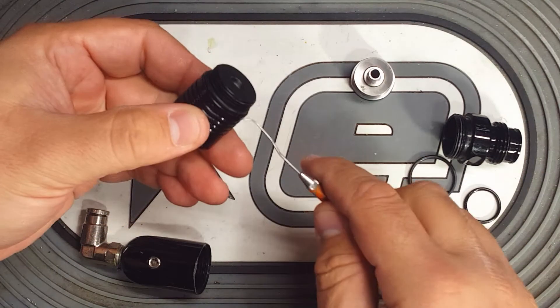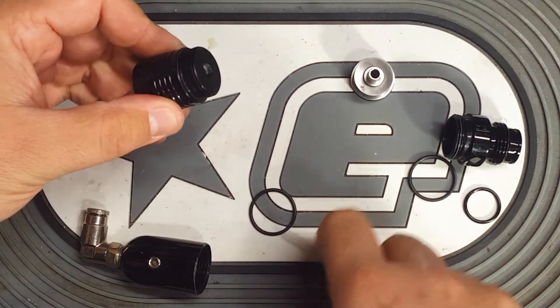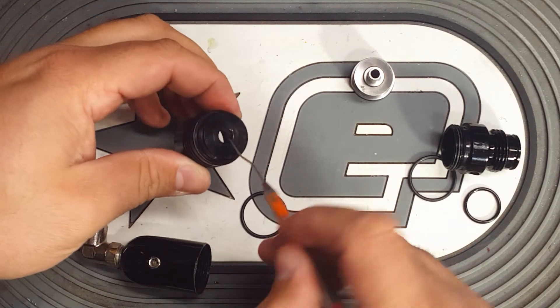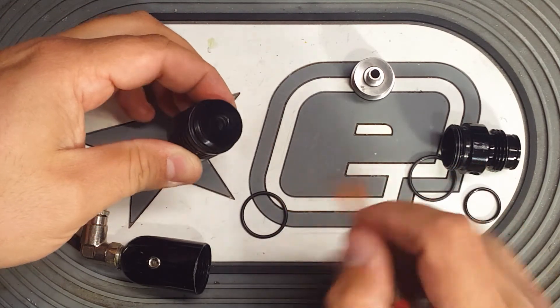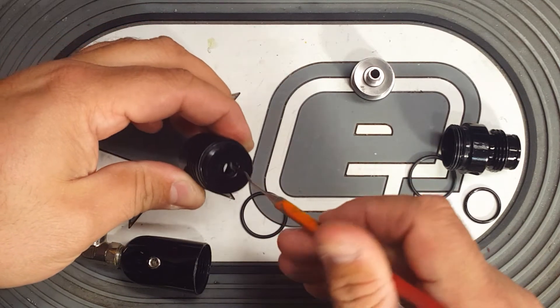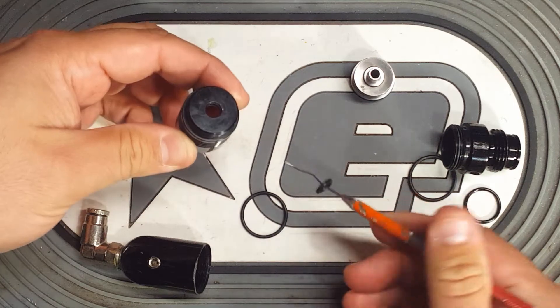So set the piston aside for now. Concentrate on the housing. Like I said, it has another number 18. And then inside this lower section here, there is the O-ring that will seal against the bottom of the piston. This is a number 10. So you need a pick to get it out.